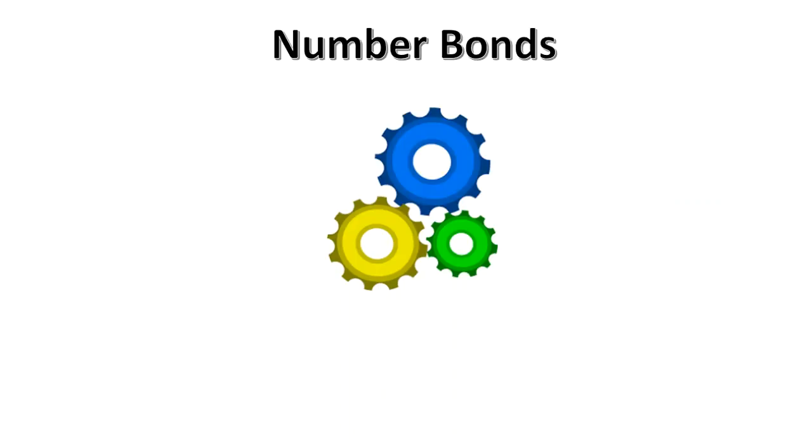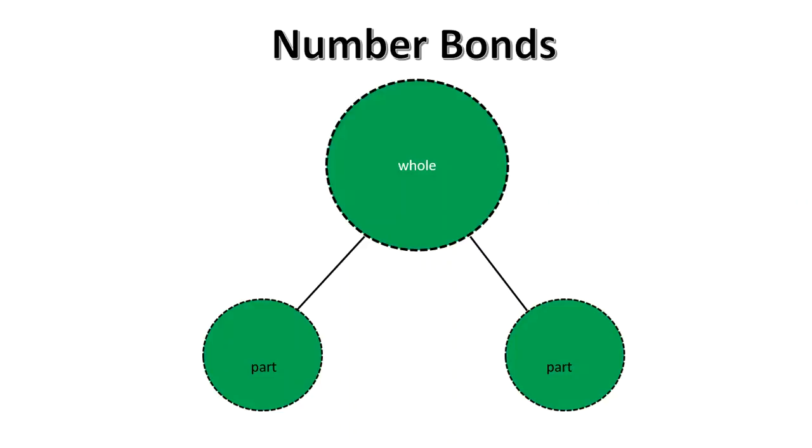This video will help you to better understand how to use number bonds in multiplication. The large circle at the top represents the whole, and the two smaller circles at the bottom connected by legs represent each part.